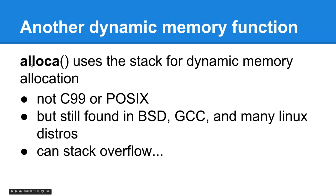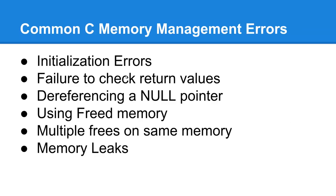There's another allocation function that uses the stack instead for dynamic memory allocation, called alloca. It's found in BSD and is recognized by the GCC compiler and some Linux distros, but it's not C99 standard or POSIX. It's noteworthy because it can result in a stack overflow if any of the buffers used in that heap chunk are buffer overflowed. We're going to cover some basic cases like initialization errors, failure to check return values, and dereferencing null pointers before we cover use after free, buffer overflow and double free bugs.